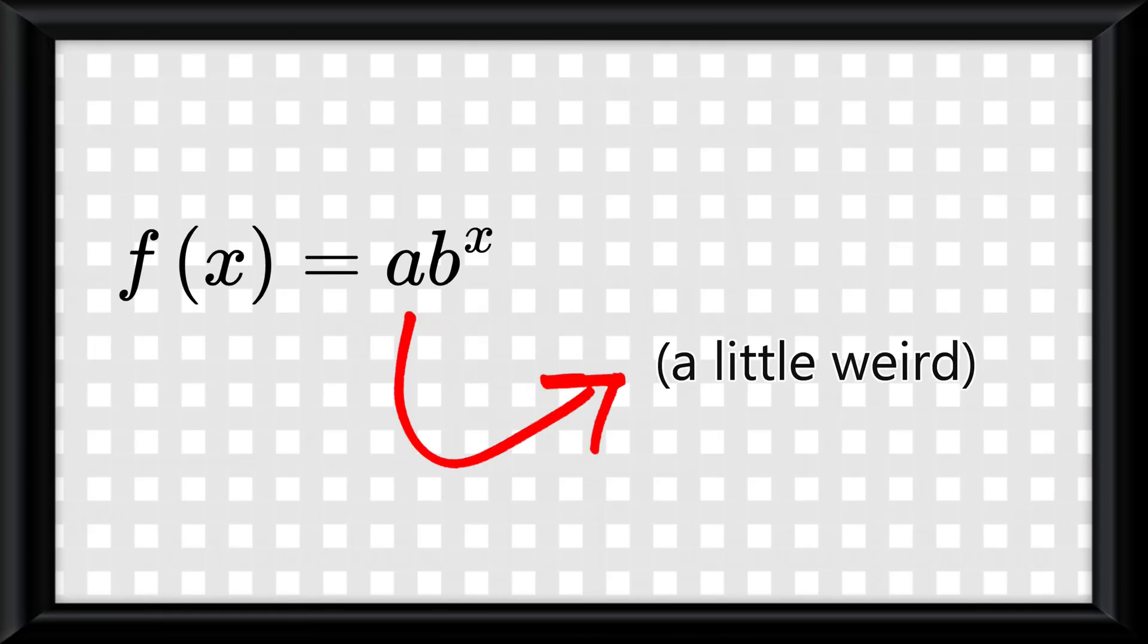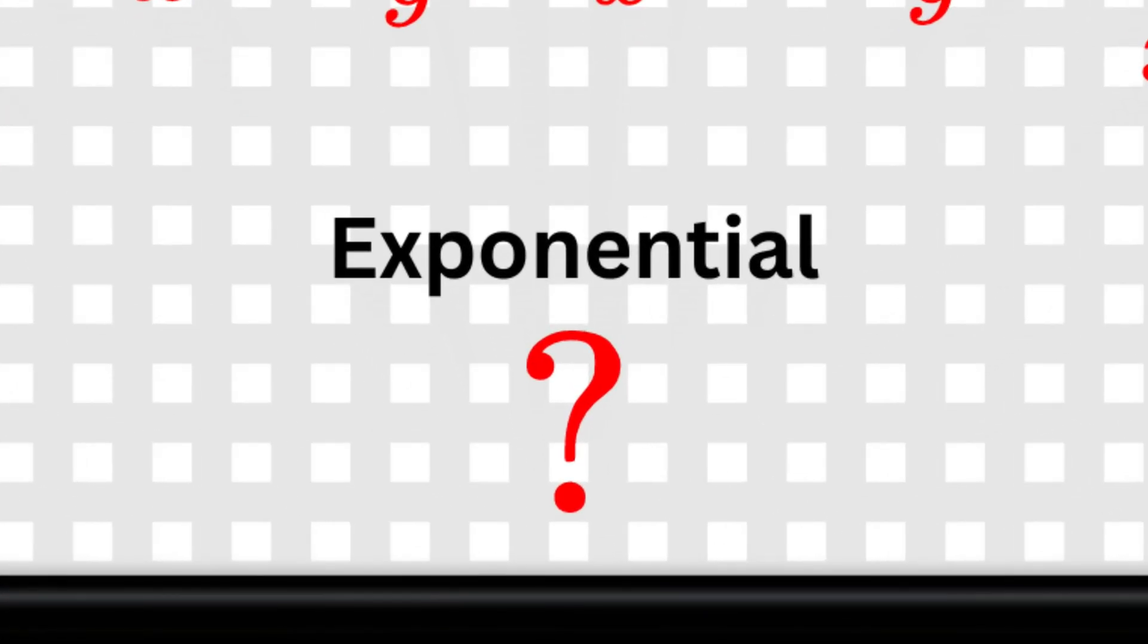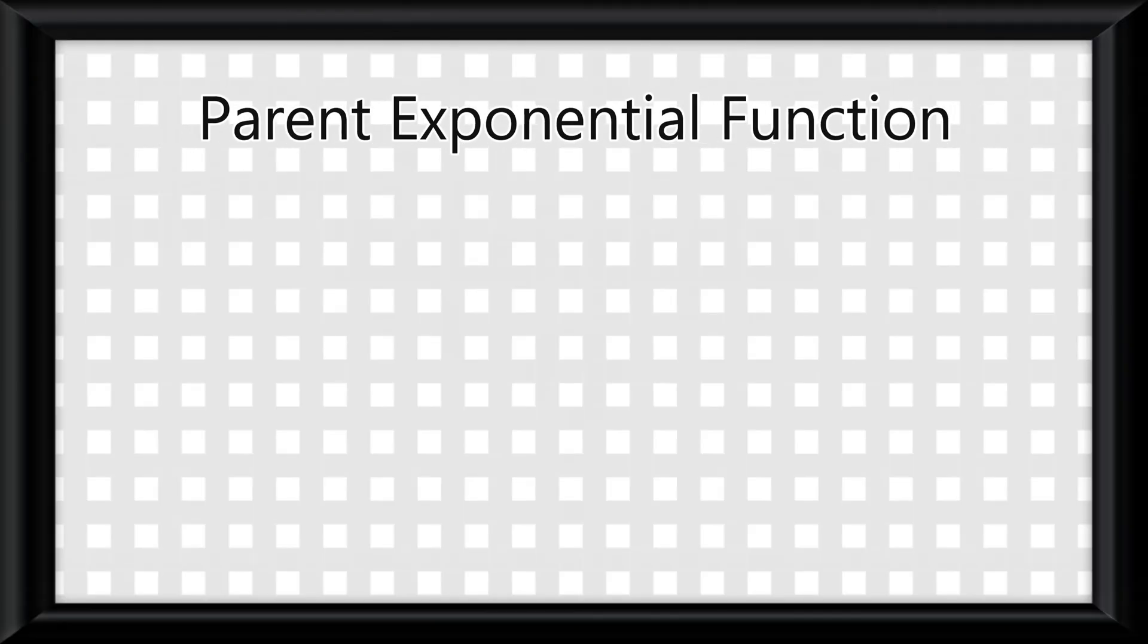Exponential functions are a little weird though, because they don't have an ironclad parent function. The parent function of an exponential function is said to be b to the x, where b is greater than 1 for a growth, or between 0 and 1 for a decay.